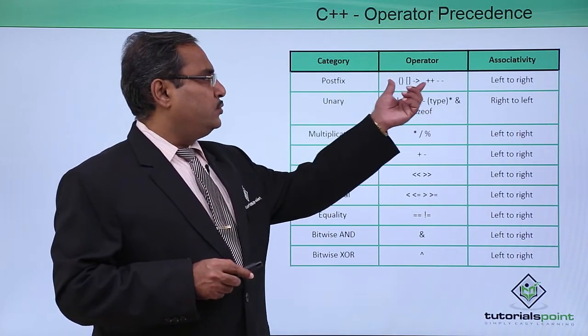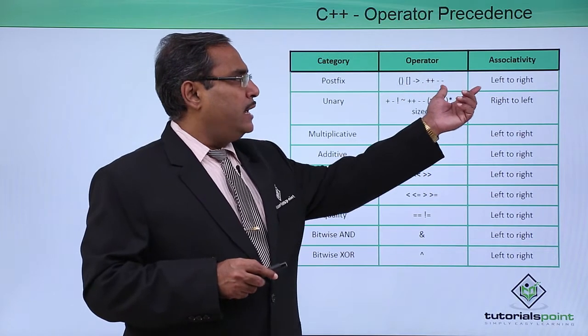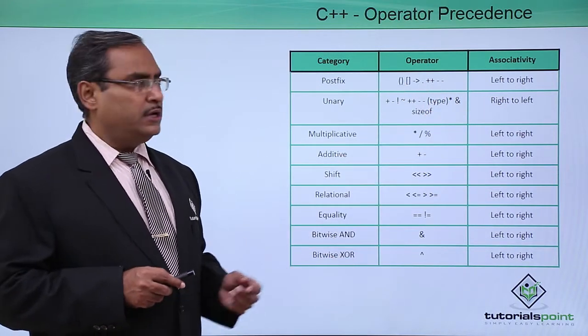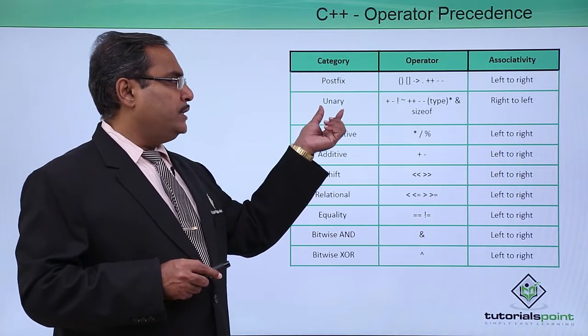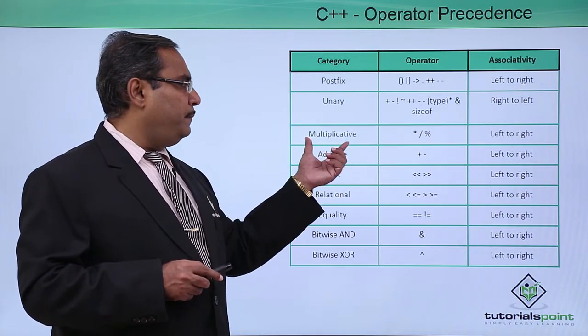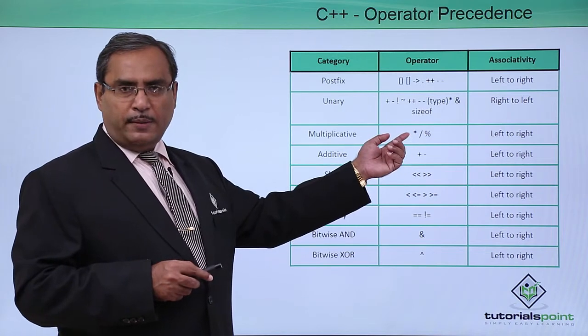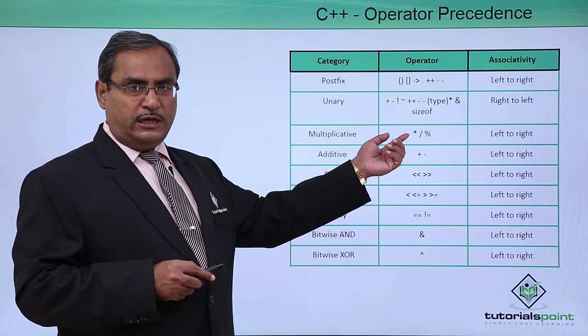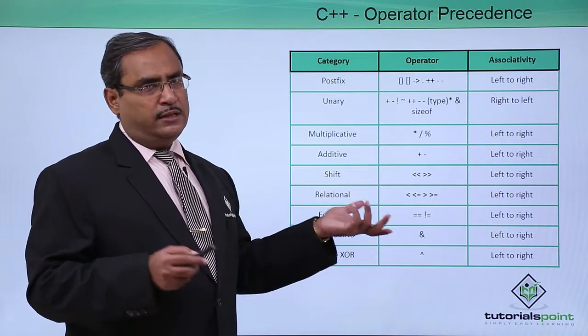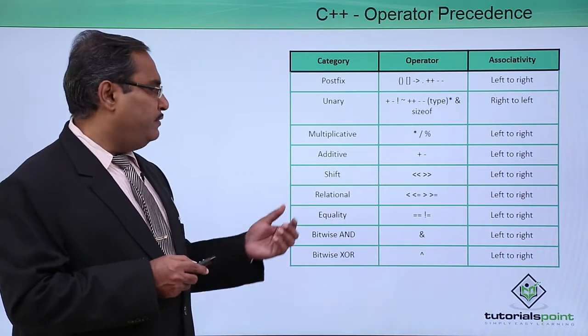Here is the postfix. These are the respective operators and their associativity is left to right, unary. This is multiplicative. Here we have star for multiplication, slash for division, and percentage for the remainder of the division, modulus.